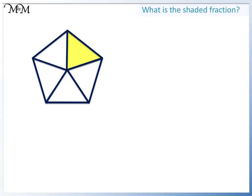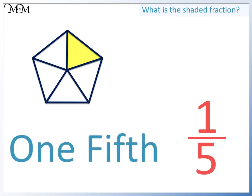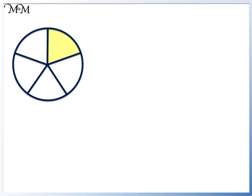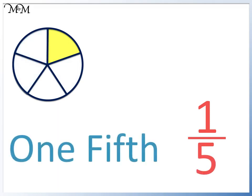We have one out of five parts. One out of five is called one fifth. Here we have one out of five equal parts. This fraction is one fifth.